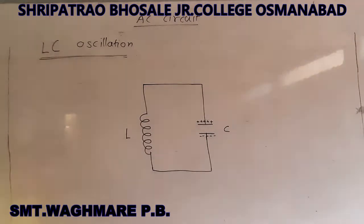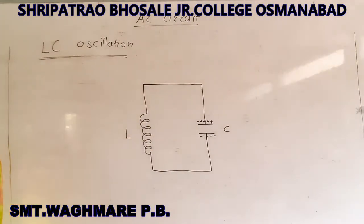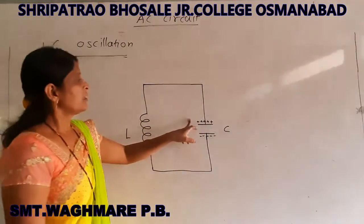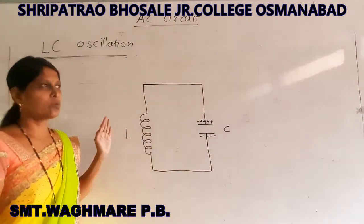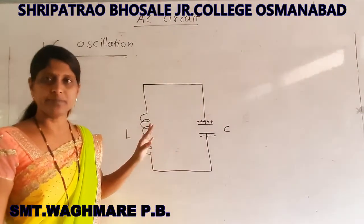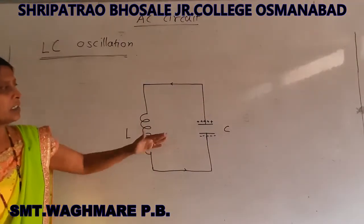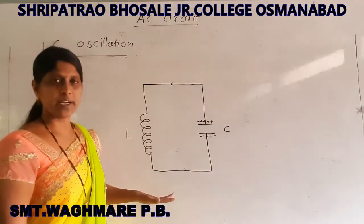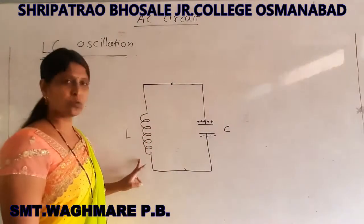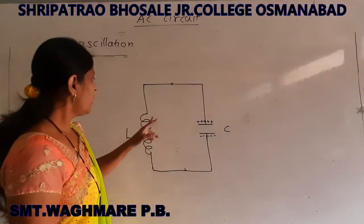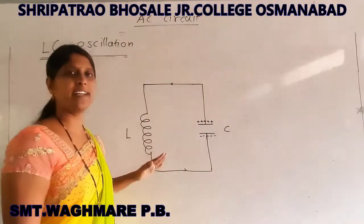When a fully charged capacitor is connected to the inductor, the charge is transferred. Current passes through the circuit, and when this current starts to flow, it varies. Due to the current passing through the inductor, a magnetic field develops around the coil. When there is a change in current, there is a change in magnetic field, and therefore the magnetic flux passing through the coil also changes.